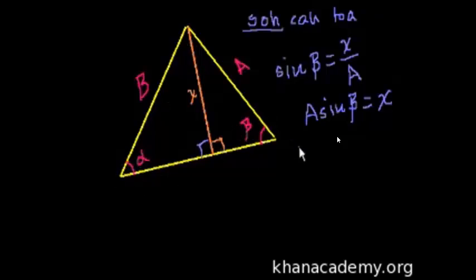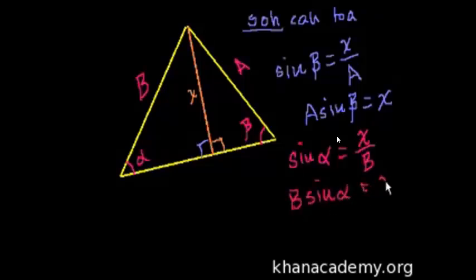So we can also write that sine of alpha is equal to opposite over hypotenuse. The opposite is X, and the hypotenuse is B. And let's solve for X again. Multiply both sides by B, and you get B sine of alpha is equal to X.